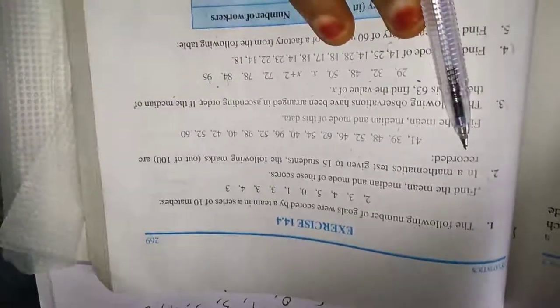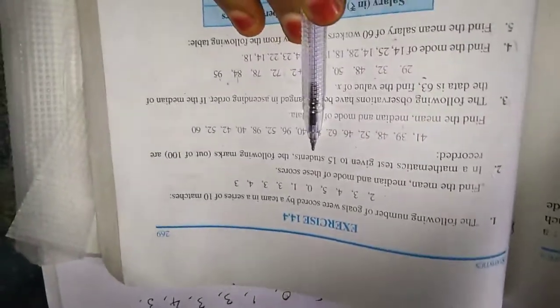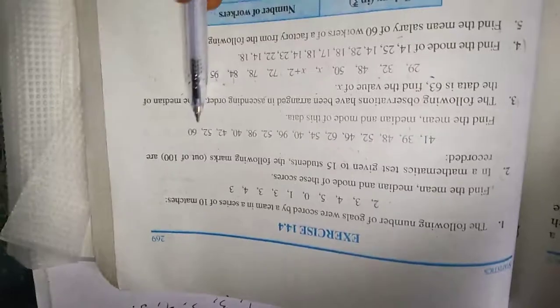Now we move to the second sum. In a Mathematics Test given to 15 students, the following marks out of 100 are recorded. Find the mean, median and mode of this data. For 15 students, center we have one number. This is the homework for you.